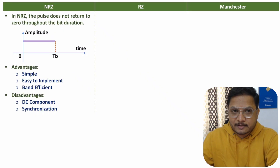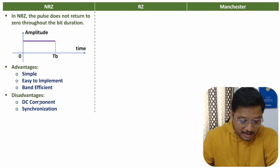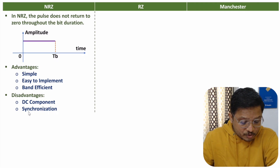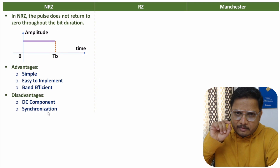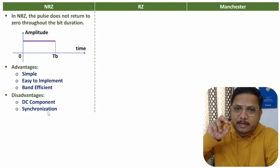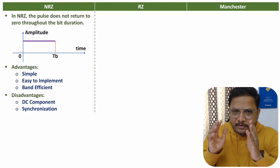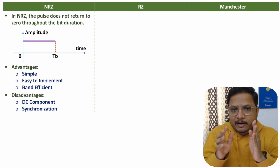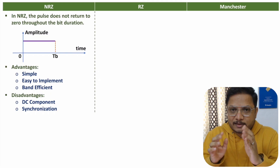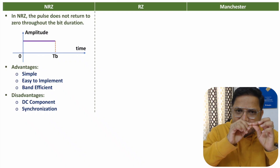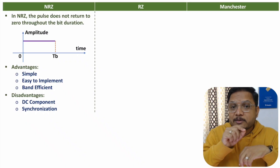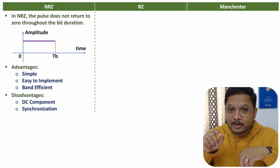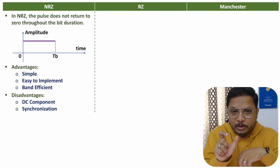Due to the average DC voltage, there will be issues when you pass this signal through a transformer or AC coupling circuits. There is also the issue of synchronization — when you transmit a sequence of ones it is difficult to identify the difference between consecutive bits, because the signal remains active high. Similarly, a sequence of zeros gives zero voltage continuously, so synchronization is a problem with NRZ.